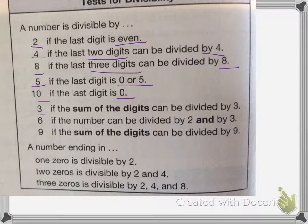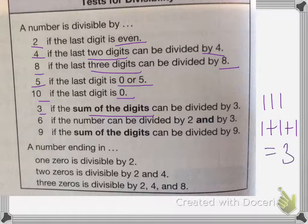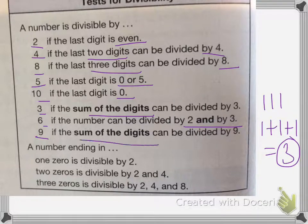3 is if the sum of the digits can be divided by 3. So that would be like 111, if I add 1 plus 1 plus 1, that's equal to 3. So if 3, the answer here, can be divided by 3, then so can it. So 111 can be divided by 3. 6 if the number can be divided by both 2 and 3, and then 9 if the sum of the digits, again, can be divided by 9.